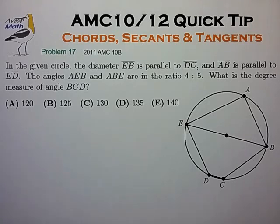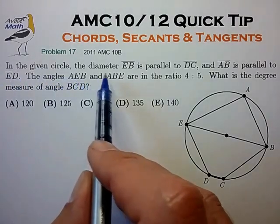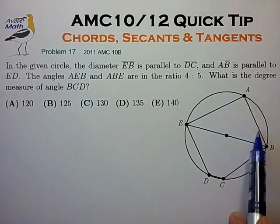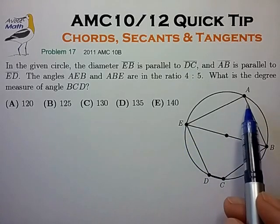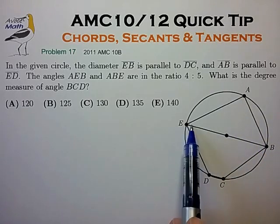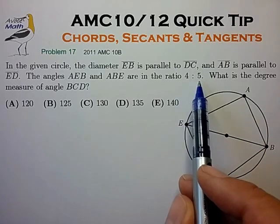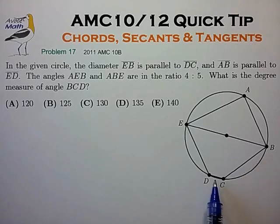Let's look at an example problem from a recent AMC. In the given circle, the diameter EB is parallel to DC, AB is parallel to ED, and angles AEB and ABE are in the ratio of four to five. What is the degree measure of angle BCD?